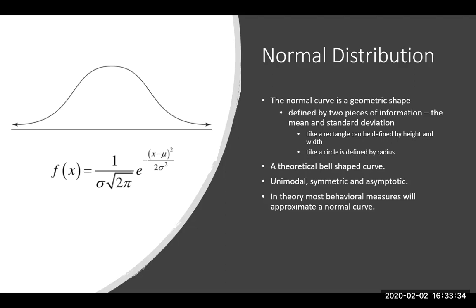Most behavioral measures naturally tend to follow a normal curve, which is what makes the normal distribution so amazing. That means all the probability tools we learn about it can be applied to these behavioral measures. Even things that don't naturally follow a normal curve can sometimes be made to follow one. For example, the first version of the IQ test was not normally distributed, so they tweaked the questions to make it normal. Once something is normally distributed, we know a great deal about it — like the likelihood of falling in different areas. Natural things like flower growth patterns or how far children wander from parents at a park also follow normal distributions.